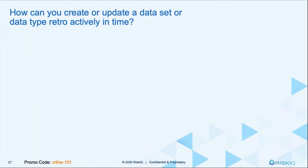One cool thing about what we do: we did an investigation with Turla where the Russians were using satellites to bring stolen data out of organizations. They would send it to a legitimate IP address over satellite, then set up a satellite receiver to receive that data and collect it. But with a single cookie, we were able to eliminate all the infrastructure that was compromised and part of this attack to find it.